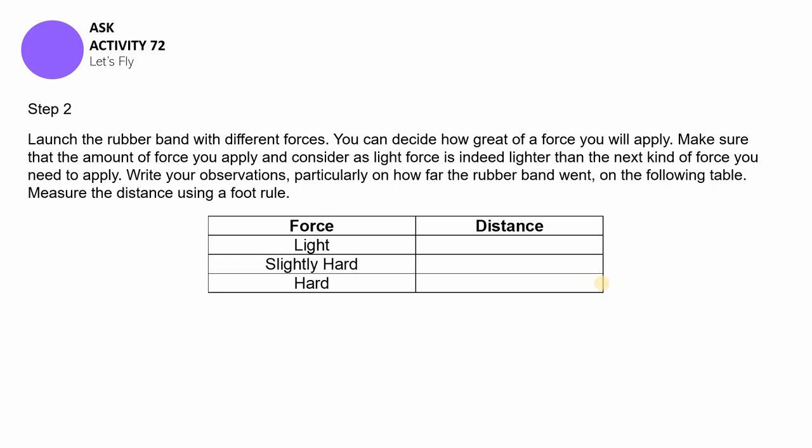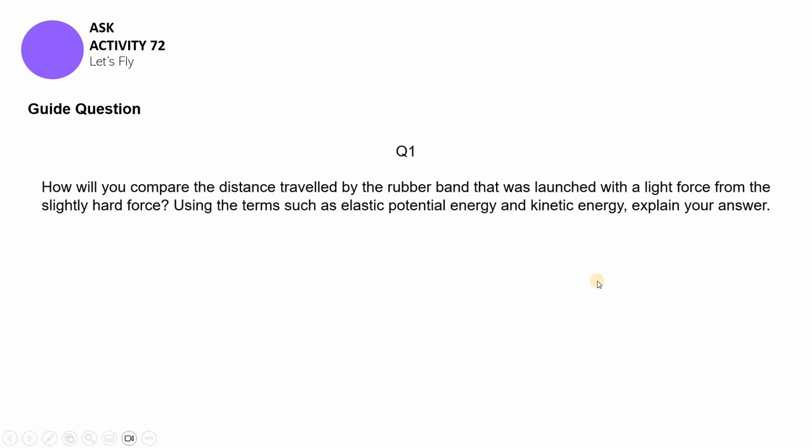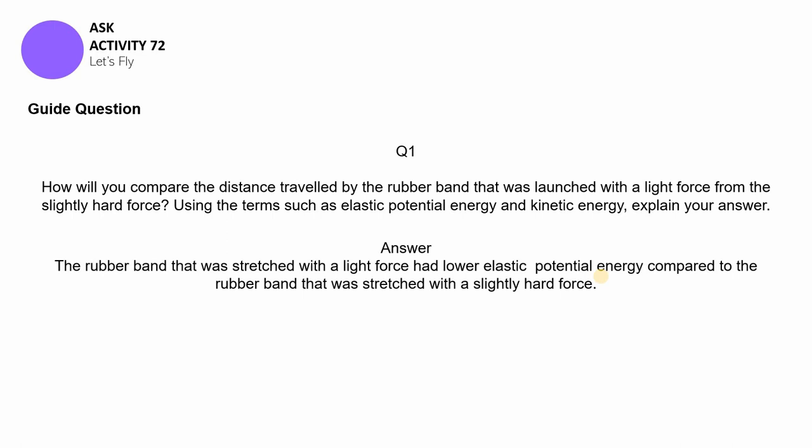Once you are done, proceed to answering the guide question. You only have one guide question to answer on the same sheet where you wrote your table: how will you compare the distance traveled by the rubber band launched with light force versus the distance traveled when launched with a slightly hard force? Using the terms elastic potential energy and kinetic energy, explain your answer. The correct answer is: the rubber band stretched with light force had lower elastic potential energy compared to the one stretched with slightly harder force, so you can expect the same observations anywhere on the planet.